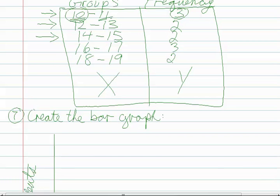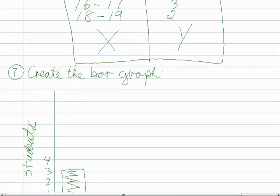In group two, for twelve or thirteen, we saw that two students got the mark twelve or thirteen.